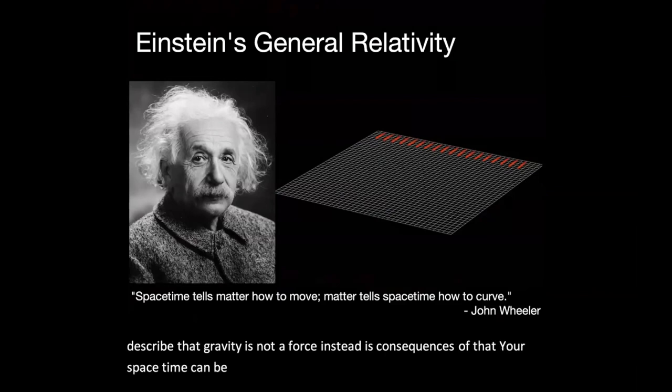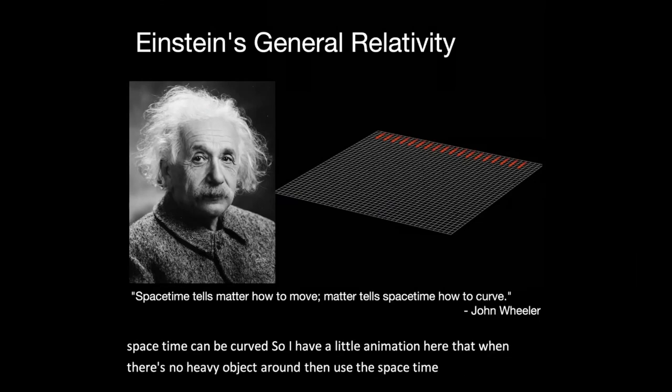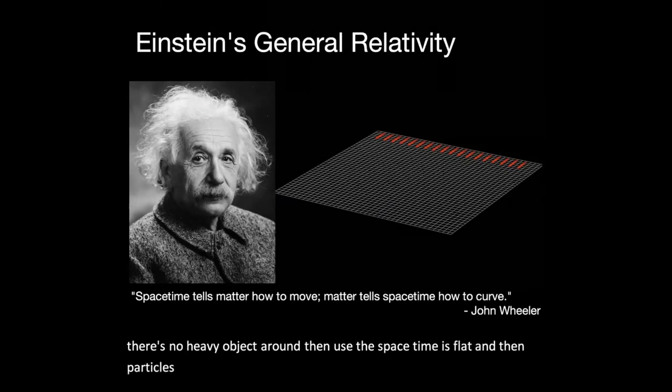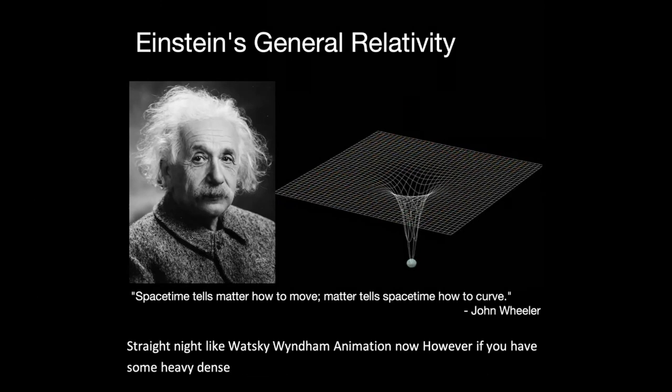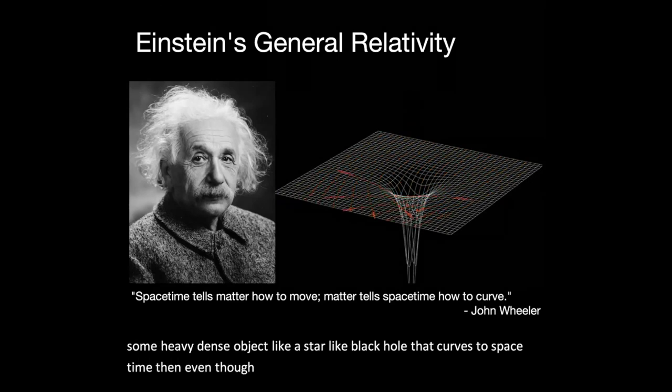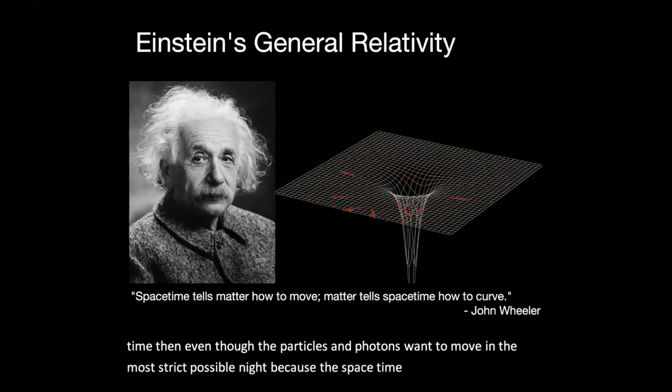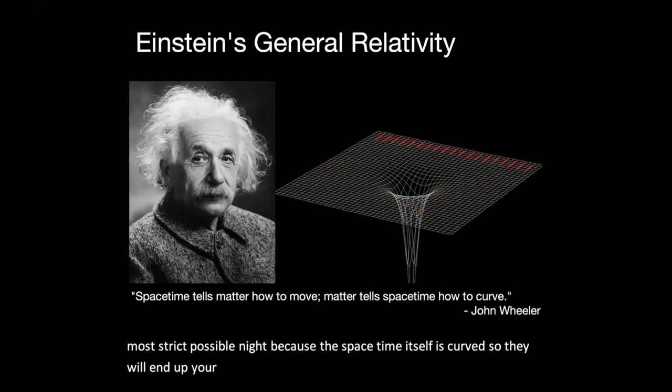So I have a little animation here that when there's no heavy object around, then the space-time is flat, and then particles, photons, or whatever, they will just move in a straight line, like what's in the animation now. However, if you have some heavy dense object, like a star, like a black hole that curves the space-time, then even though the particles and photons want to move in the most straight possible line, because the space-time itself is curved, so they will end up curving in their orbits.